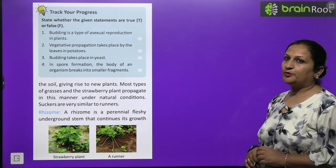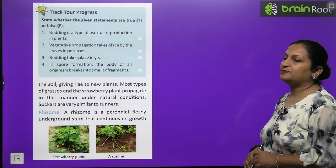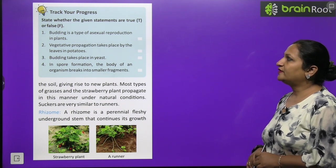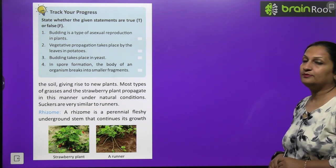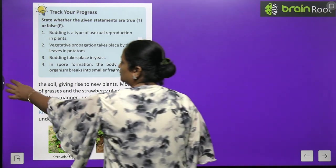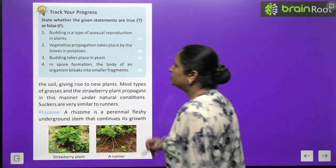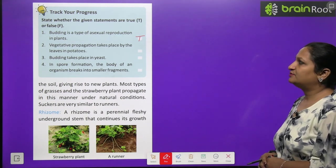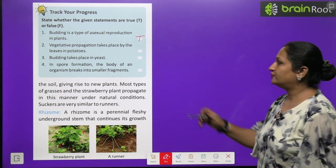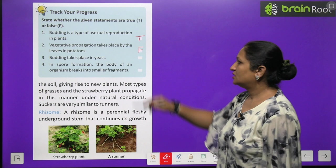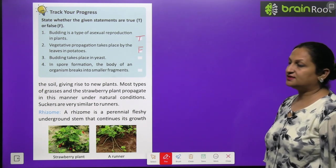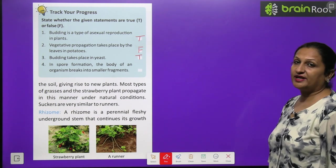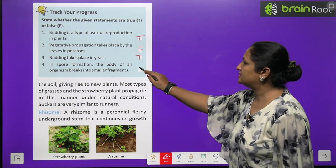Have a look on track your progress children. State whether the given statements are true or false. Budding is a type of asexual reproduction in plants - this is true. Vegetative propagation takes place by the leaves in potatoes - false. Budding takes place in yeast - yes, this is true. In spore formation body of the organism breaks into small fragments - no, this is false.